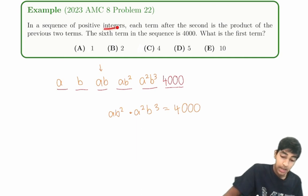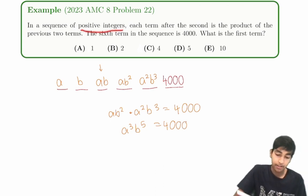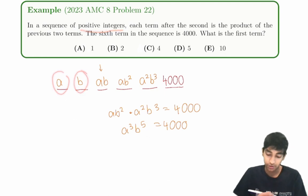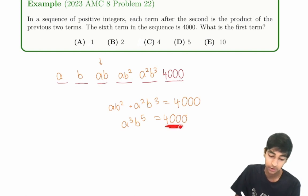And another key condition here is a sequence of positive integers. So maybe we'll be using that somewhere. So this implies that A cubed B to the five is 4,000. Okay, but notice that it's a sequence of positive integers. So A and B have to be integers. So how should we do this?